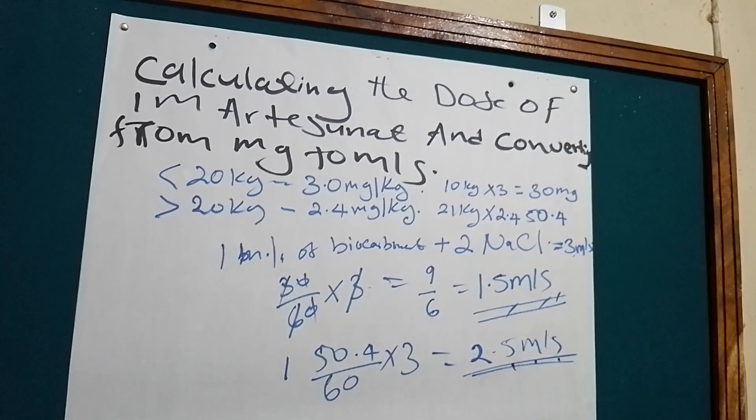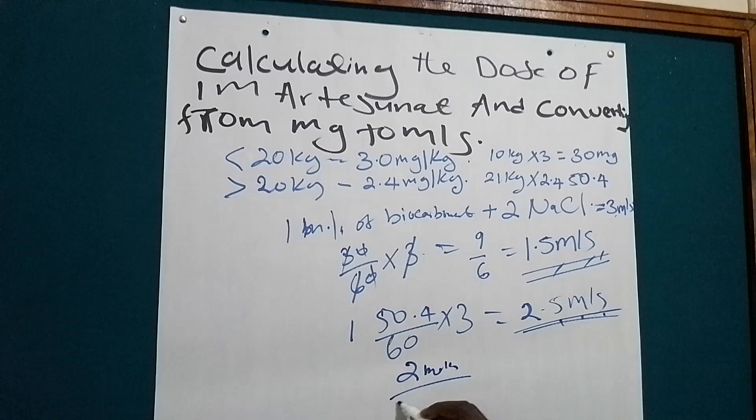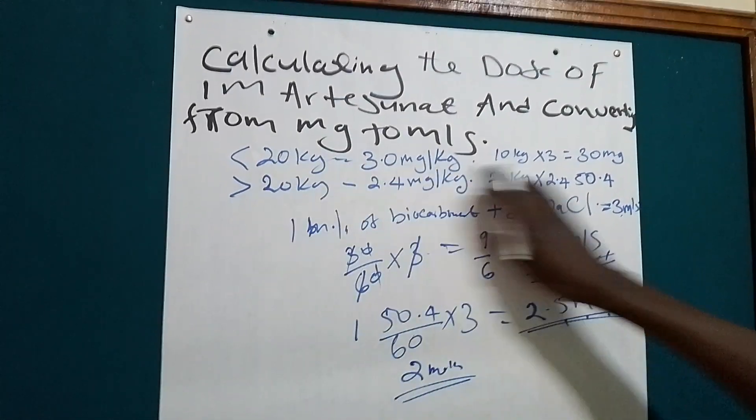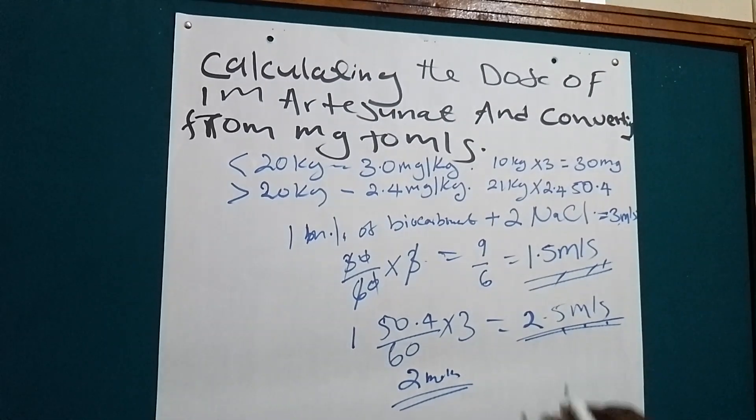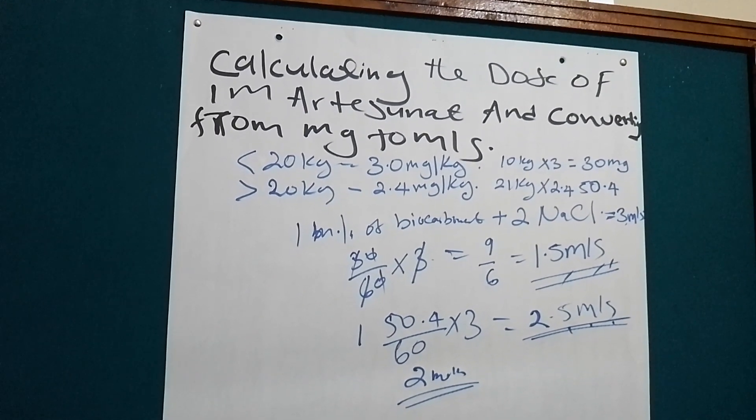The second method is the simplest. We are going to multiply all the things and divide it, and then lastly we are going to get the milliliters to be aspirated.